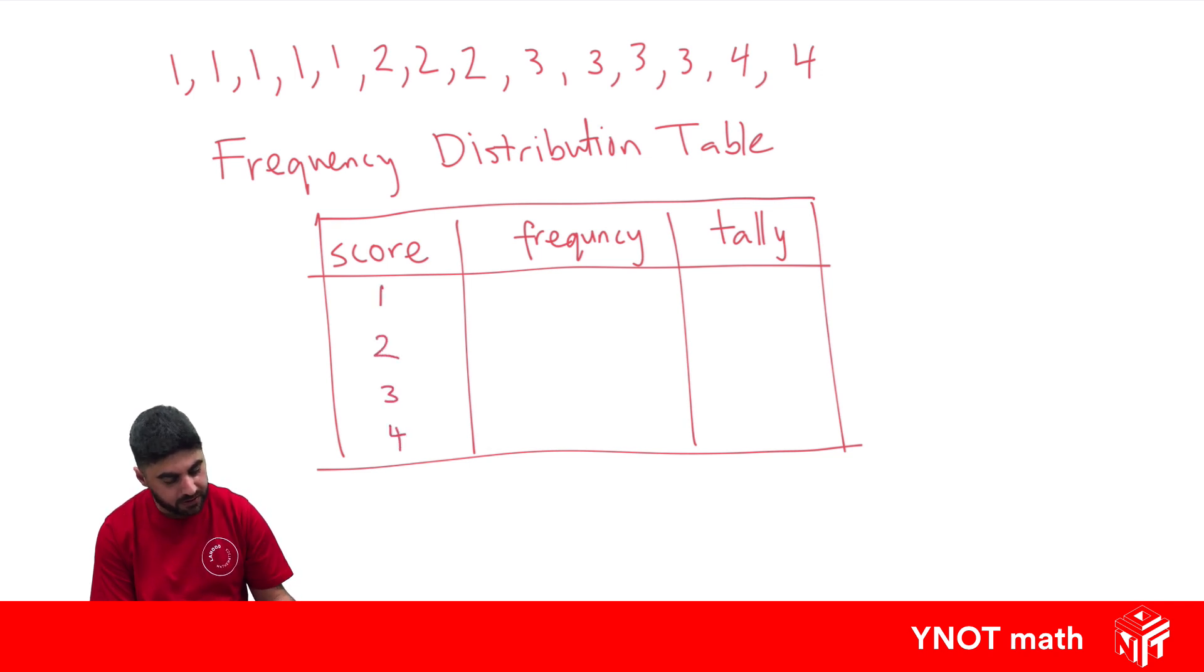And let's tally them up. So we've got one, two, three, four, five ones, so then we can write five in our frequency. One, two, three twos, so three. One, two, three, four - four threes, and one, two fours.